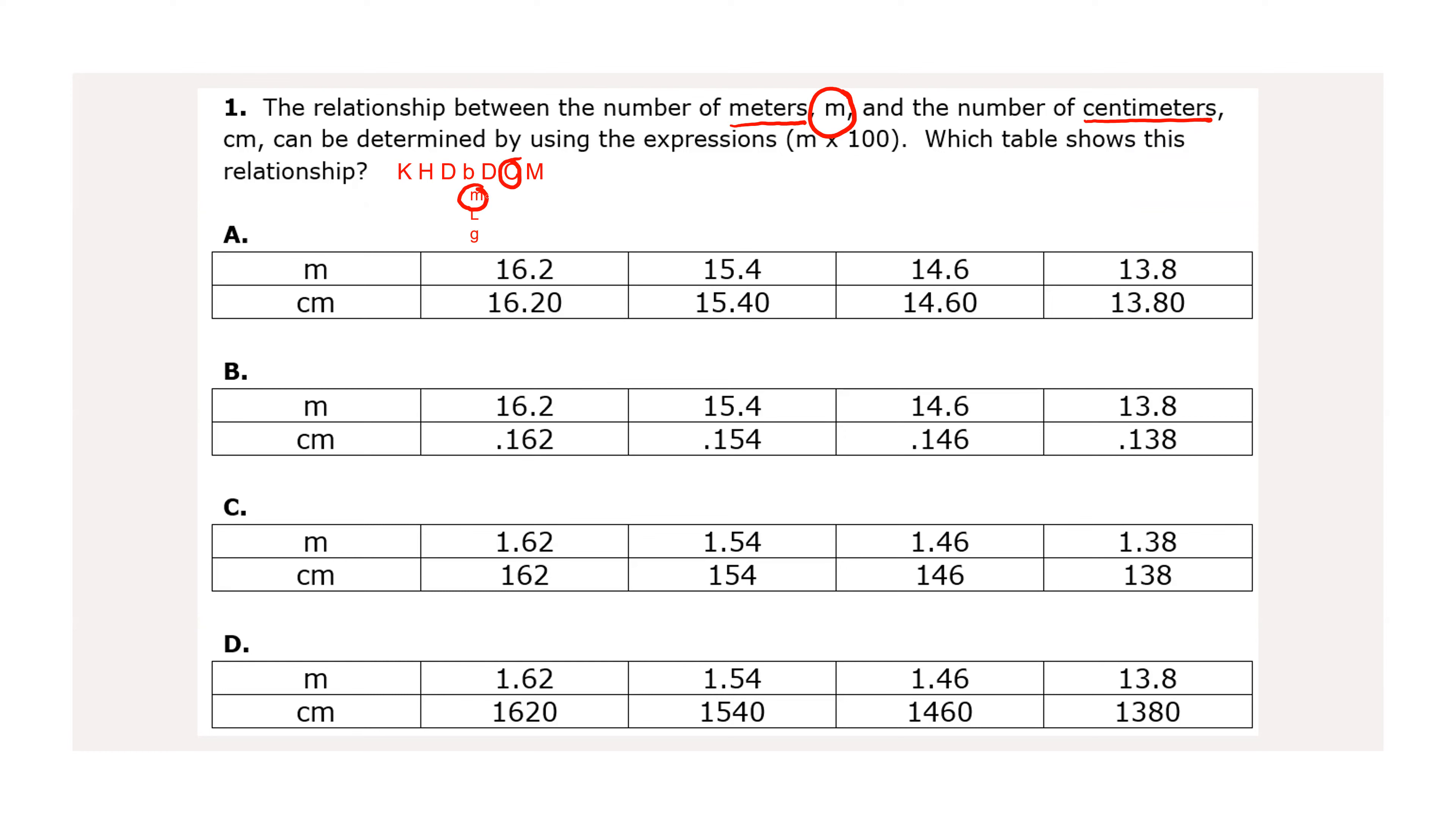So we're going between those two conversions, those two measurements. And if I'm trying to figure out how many decimal spots do I move, I start at my meters and I go once, twice to get to my centimeters. And that is the same thing as saying meters times 100 because that's two place values.